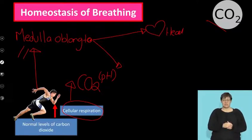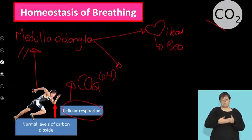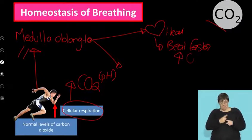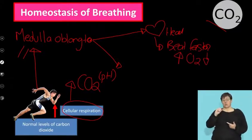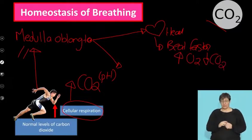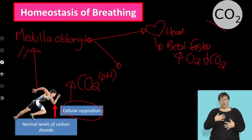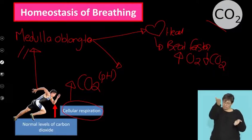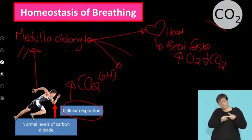The first organ it sends a message to is the heart. It says to the heart: you need to beat faster. Why? Very simply — I'm going to get oxygen into my body quicker, and I'm going to get carbon dioxide to my lungs quicker. So the heart must beat fast. I'm sure after exercise you've noticed your heart is beating rapidly — it's beating to get those carbon dioxide levels down.